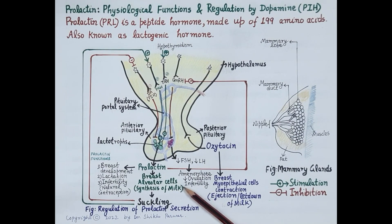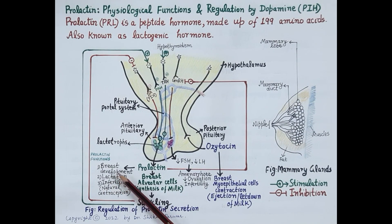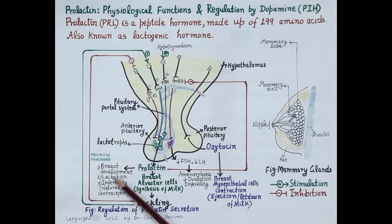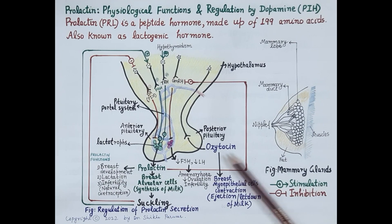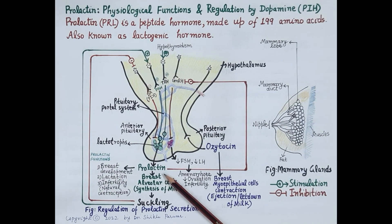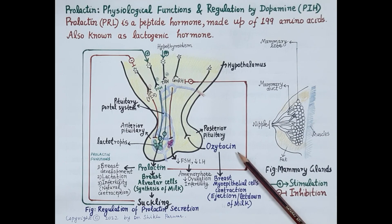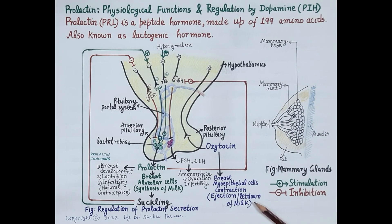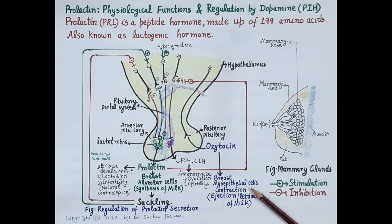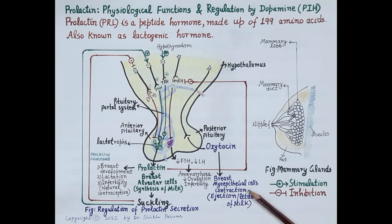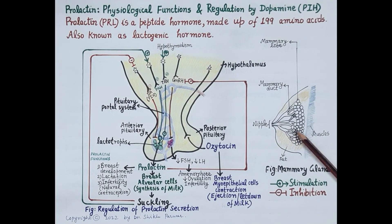There are two hormones essential for the process of lactation: prolactin and oxytocin. Prolactin is essential for the synthesis of milk in the alveolar cells of the lobules. Oxytocin is essential for the ejection or let down of milk from the breast due to contraction of the myoepithelial cells, which are also present in the lobules.